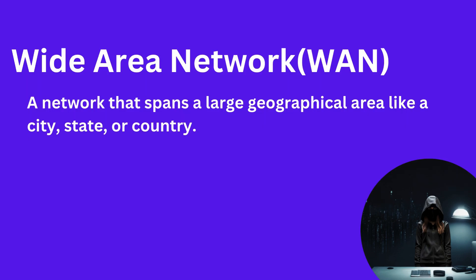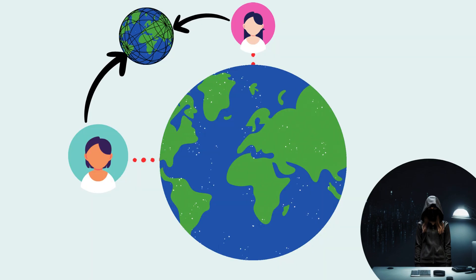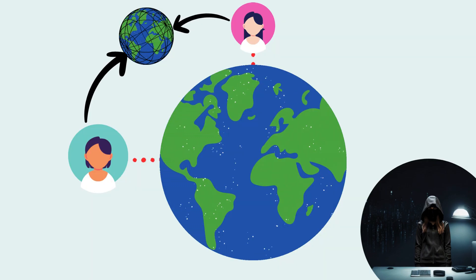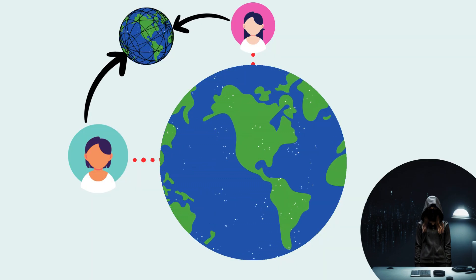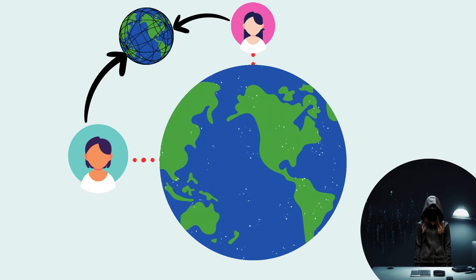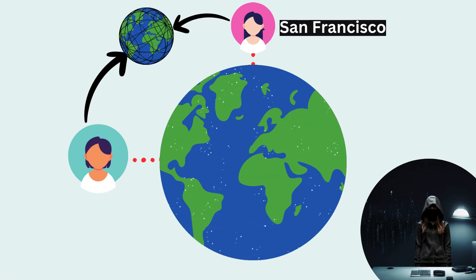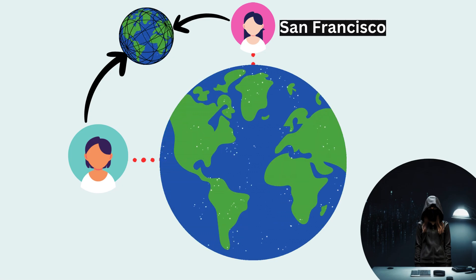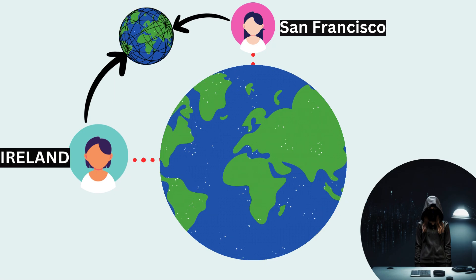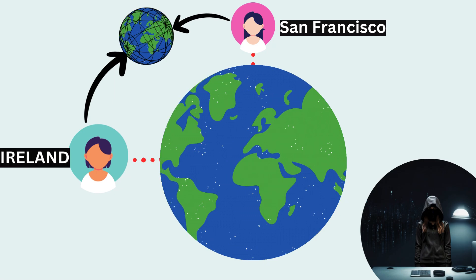A wide area network, or WAN, spans a large geographical area like a city, state, or country. You can think of the internet as one big WAN. An employee of a company in San Francisco can communicate and share resources with another employee in Dublin, Ireland over the WAN.